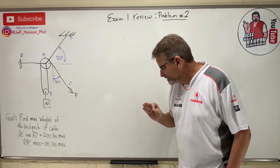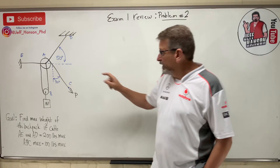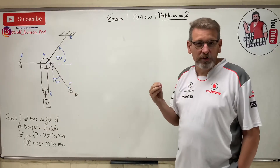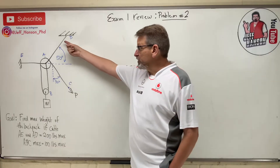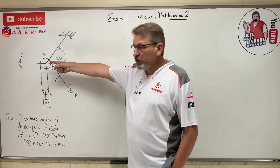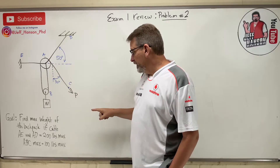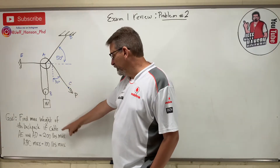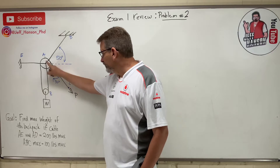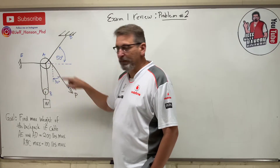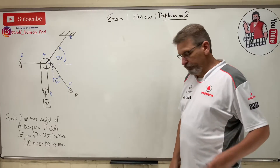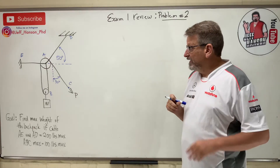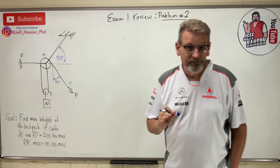Find the max weight of the backpack given that cables AD and AE have a max of 200 pounds each — if either one goes over 200 pounds, breakage. And then cable ABC, this big long cable, can only handle 100 pounds max. Let's see if we can figure this out.